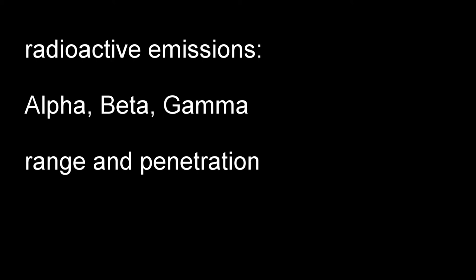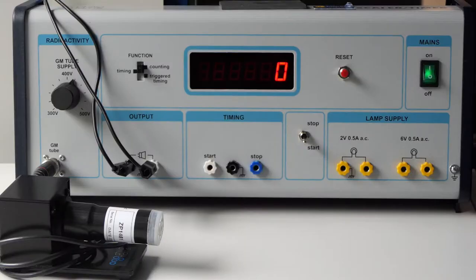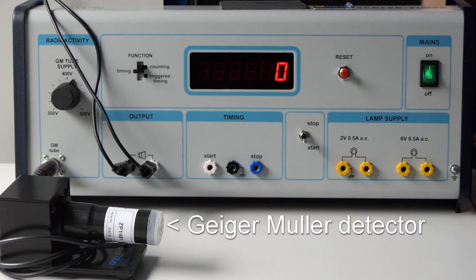Alpha, beta, and gamma are the three main types of radioactive emission. We're going to investigate their range and penetration using a Geiger-Müller tube and a counter.